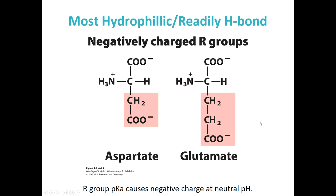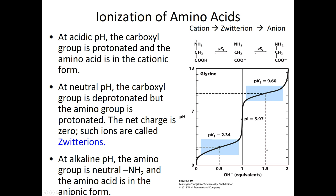Our last group here — aspartate and glutamate, also called aspartic acid and glutamic acid — are our negatively charged R groups. Both of these are going to have a negatively charged carboxylic acid at neutral pH where the protons have been lost.